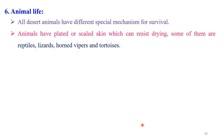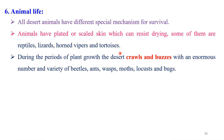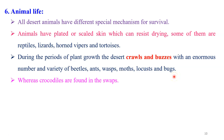If you are talking about animal life, we have specific animal life in this region. All desert animals have different special mechanisms for survival. Animals have plated scale skin which can resist drying. Some of them are reptiles, lizards, horned vipers, and tortoises that we observe in this region. During the period of plant growth, the desert crawls with enormous numbers of beetles, ants, vipers, locusts, and worms we observe in that area. This is about the animal life.